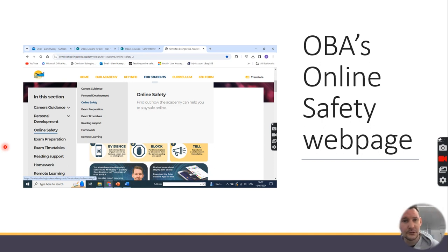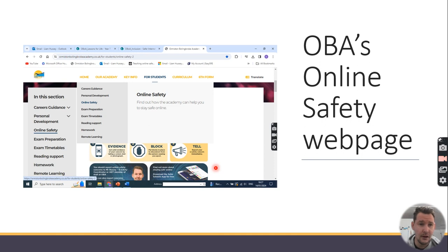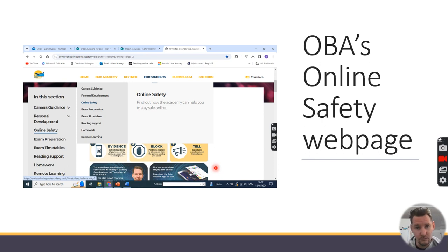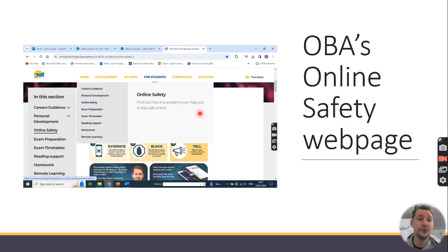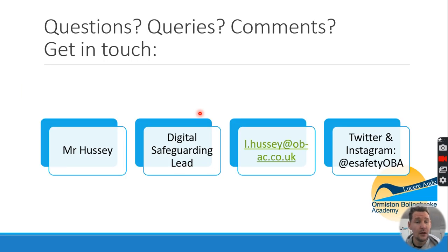To find further support, on the OBA school website click on 'For Students' and then 'Online Safety.' There's a dedicated page for internet safety and digital safeguarding with conversation starters, links to privacy guides, and sources of support. There are also links to download the Safer Schools and National Online Safety apps, and my contact details are listed there too.